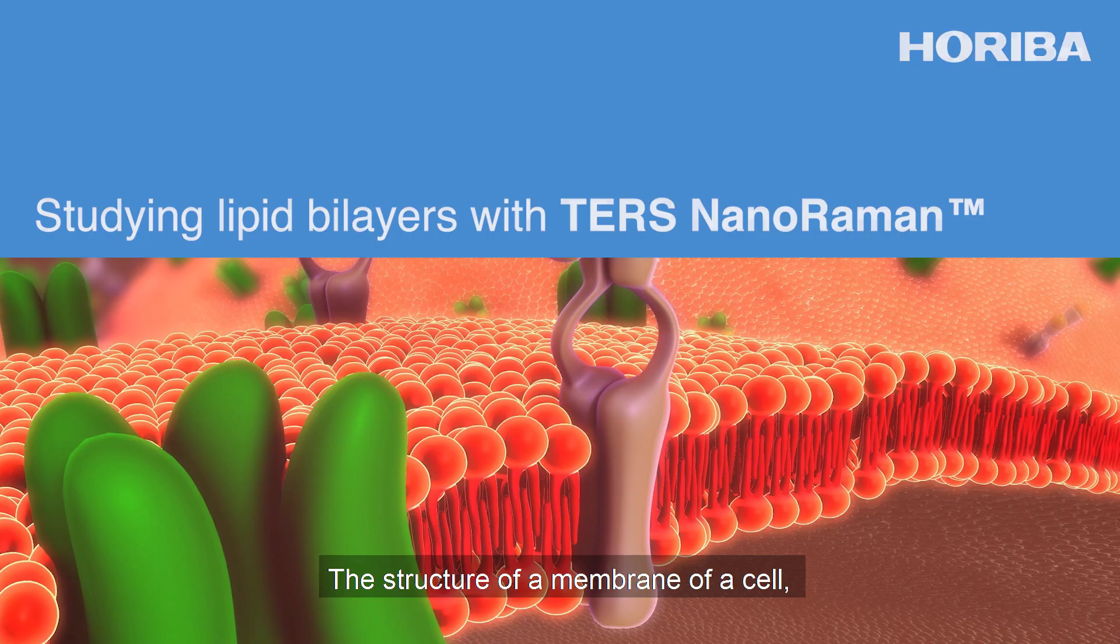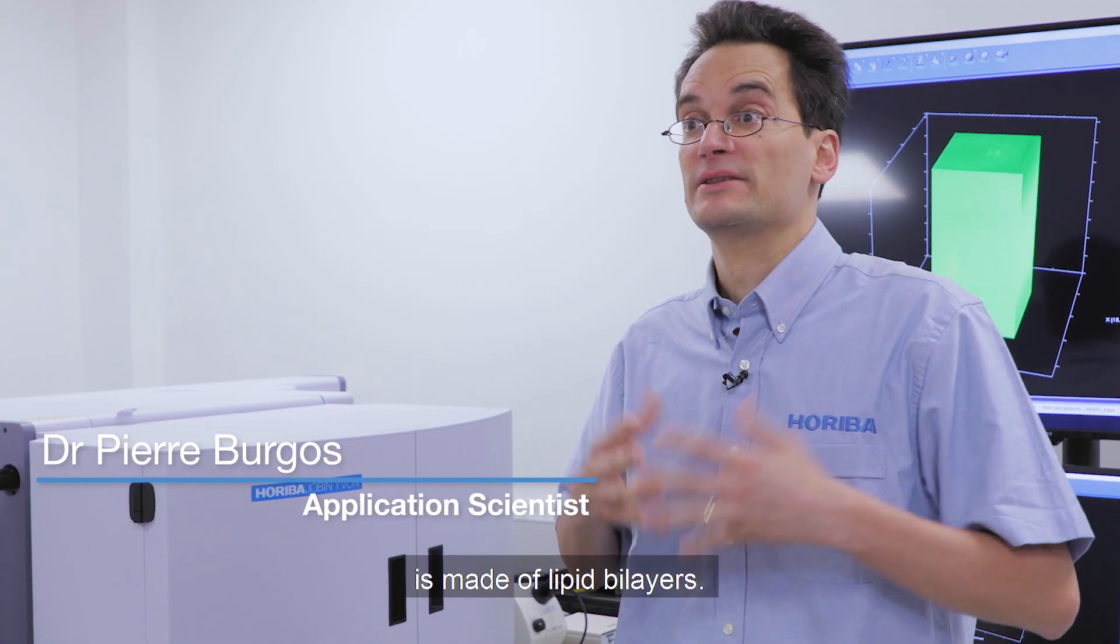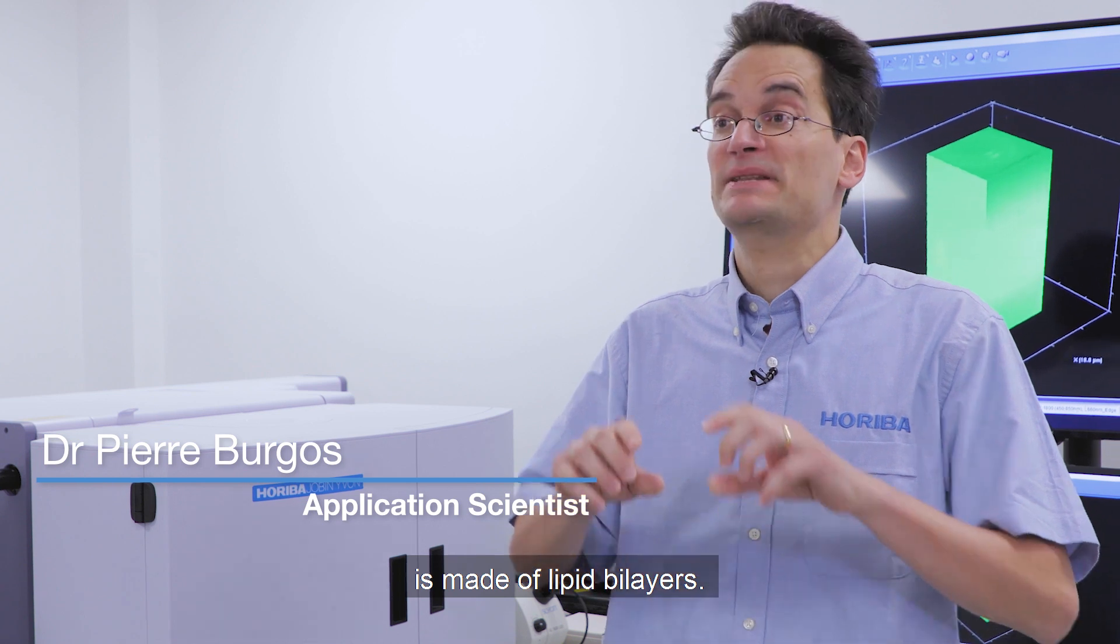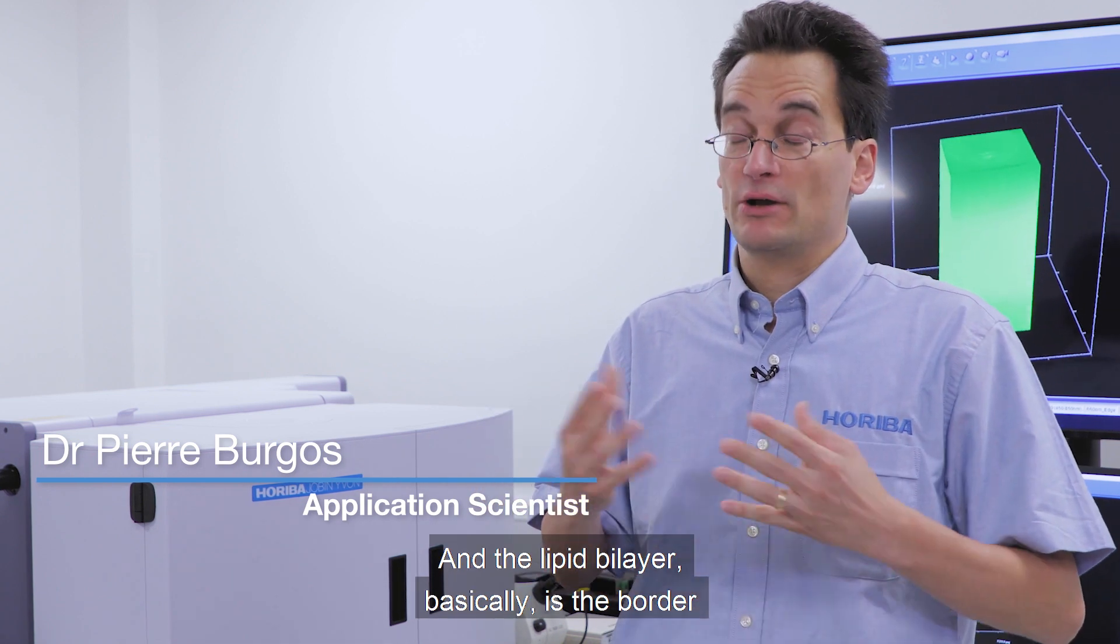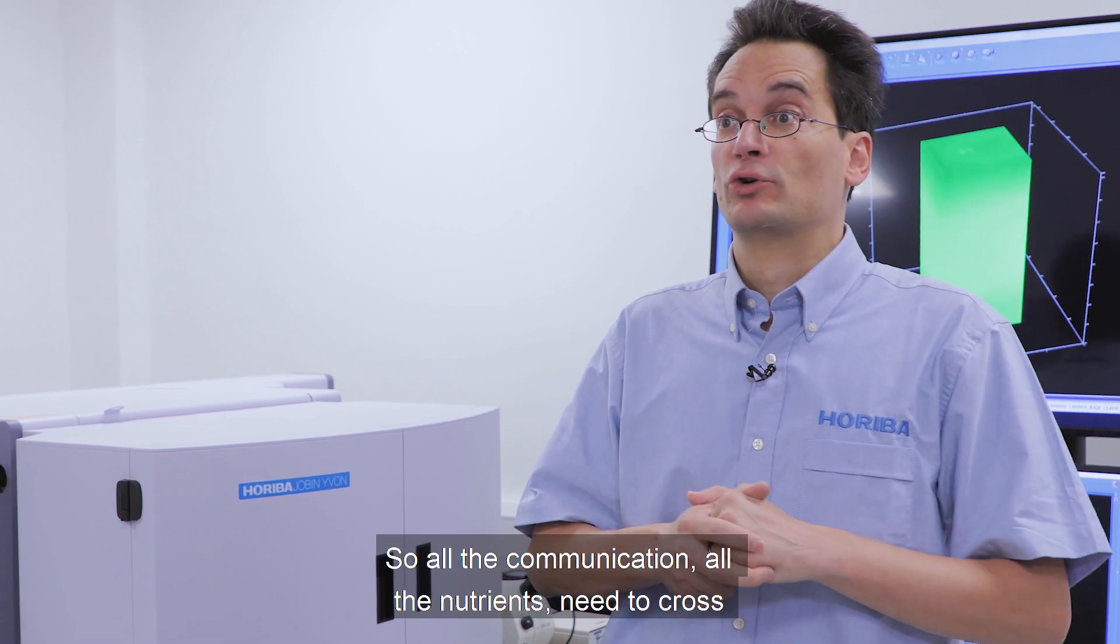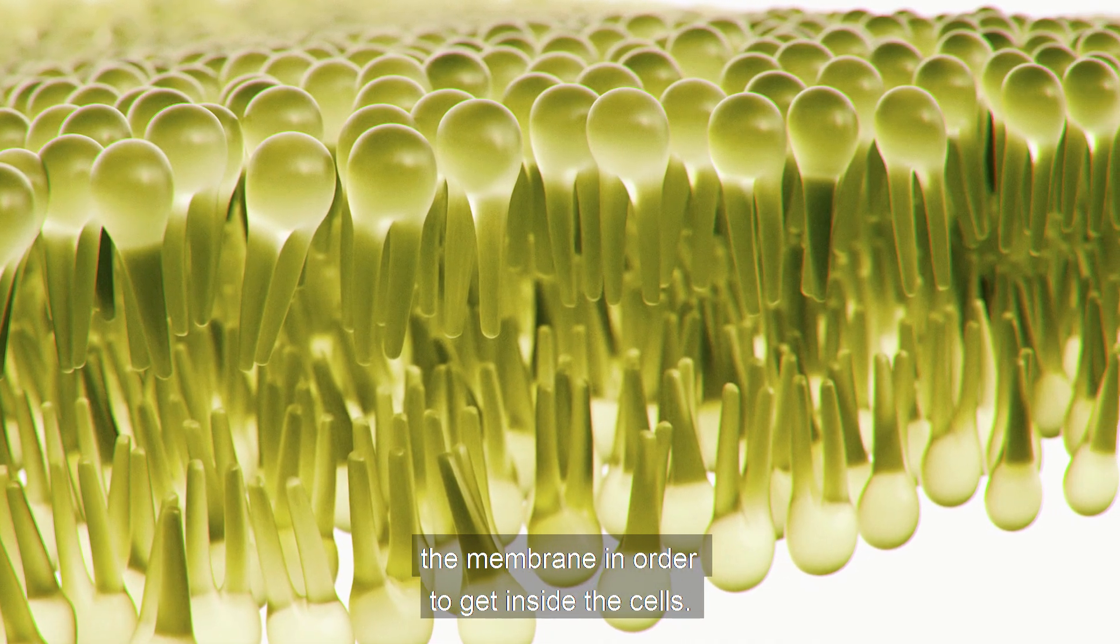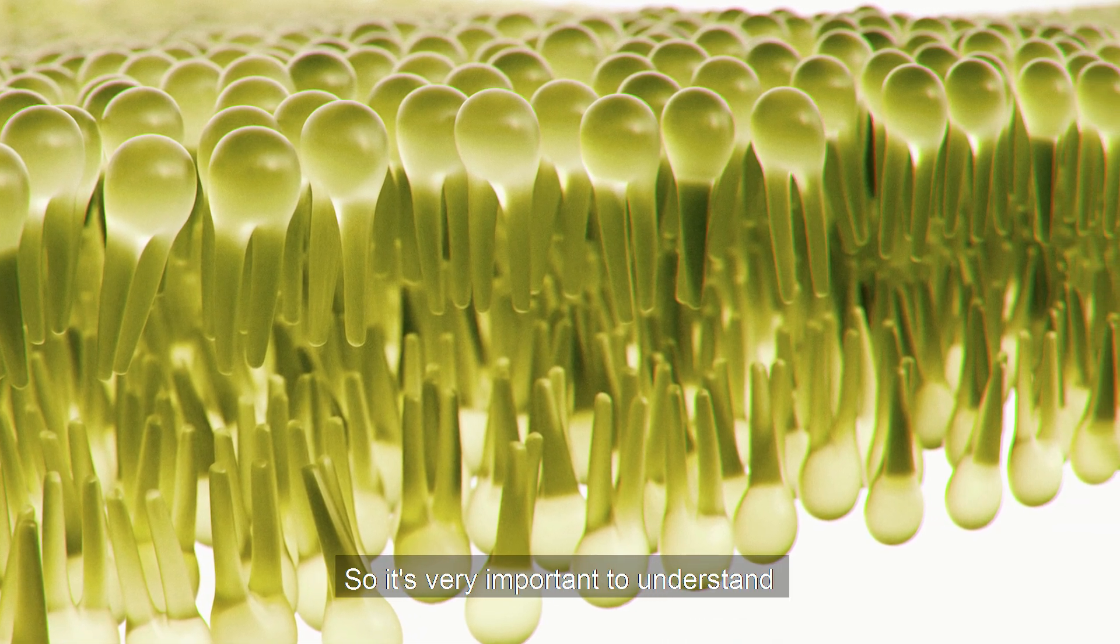The structure of all membranes of cells in animals, bacteria, and humans is made of lipid bilayers. The lipid bilayer is basically a border between the inside of the cell and the outside, so all nutrients need to cross the membrane to get inside the cell.